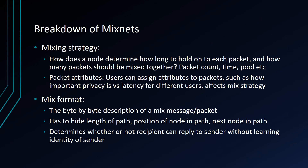There are two main components of mix nets. The first is the mixing strategy — how does the node determine how long to hold on to each packet, and how many packets should be mixed together? There are a couple of ways to do this. The most fundamental are packet count or time. For example, a mix could wait until it receives 100 packets before shuffling all of them and sending them out in a batch. Likewise, it could wait for 30 minutes and then send out all the packets received in that time.